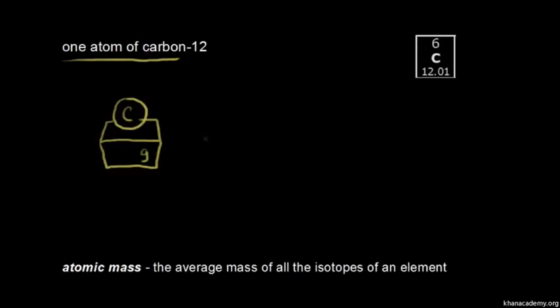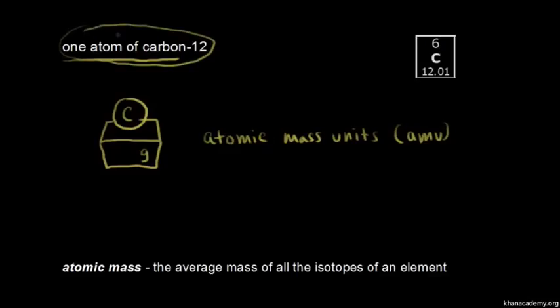And so instead of working with these extremely small numbers, chemists came up with a new term called atomic mass units. So atomic mass units, we could abbreviate that AMU. And chemists took the mass of one atom of carbon-12 as the definition. Then one atom of carbon-12 is equal to 12 AMUs. And everything else is relative to that value.